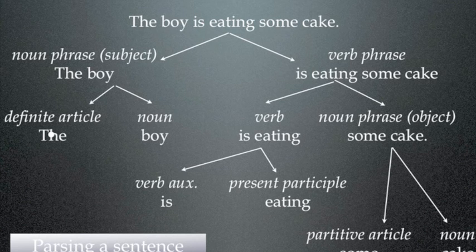So the verb is 'is eating,' which has an auxiliary part, 'is,' and a present participle, 'eating.' And the noun phrase 'some cake' has got a part of the article, 'some,' and a noun, 'cake.'